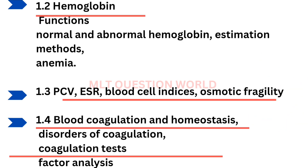Next, HB — normal and abnormal — estimation methods, then PCV, ESR, blood cell indices, osmotic fragility, coagulation studies, etc.